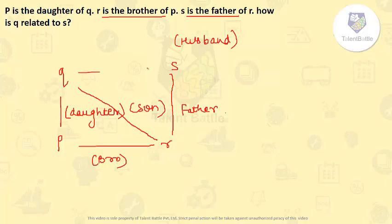How is Q related to S? So Q and S is going to be husband, wife. So Q is going to be wife here. They have asked how is Q related to S? So we have to say wife. Answer will be wife here.